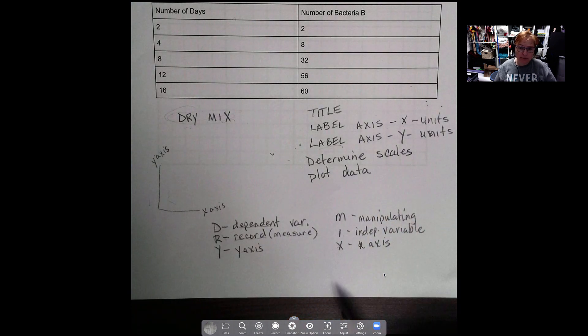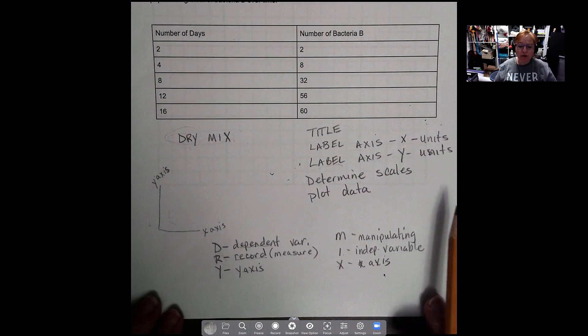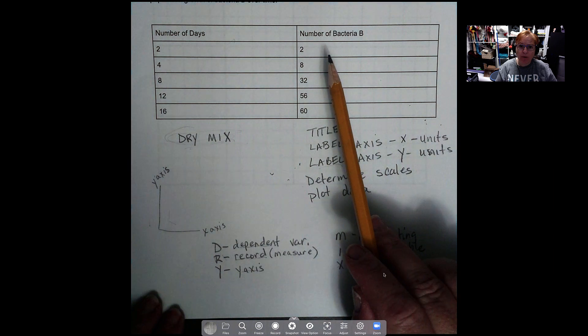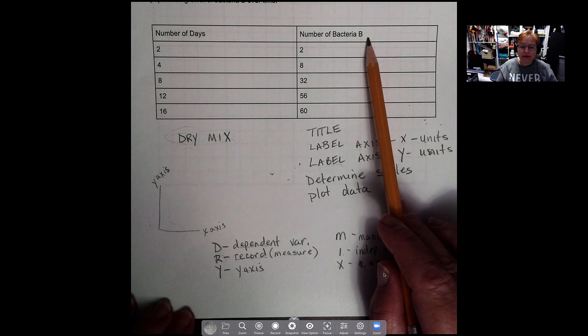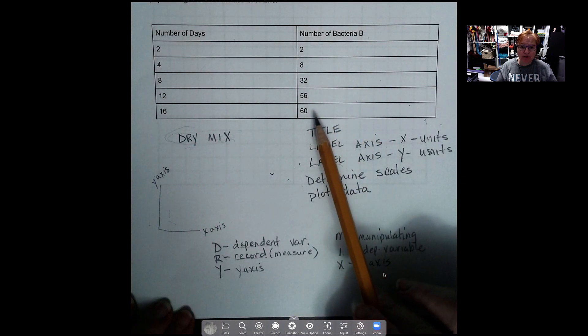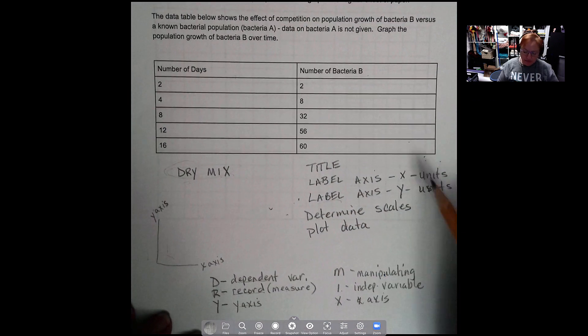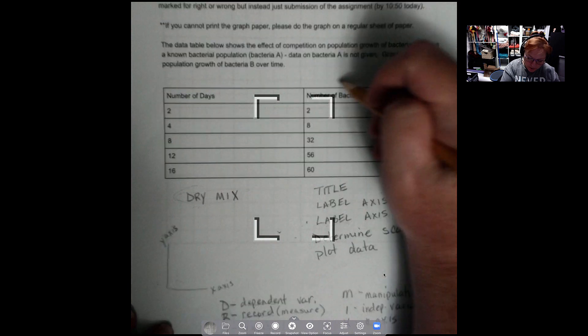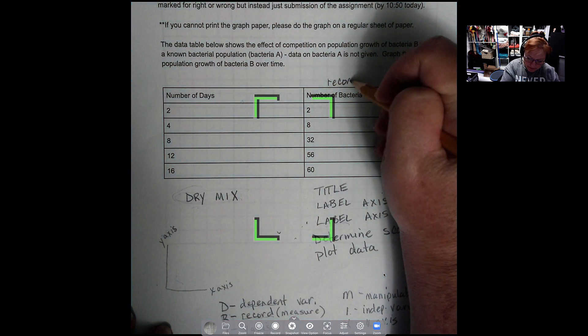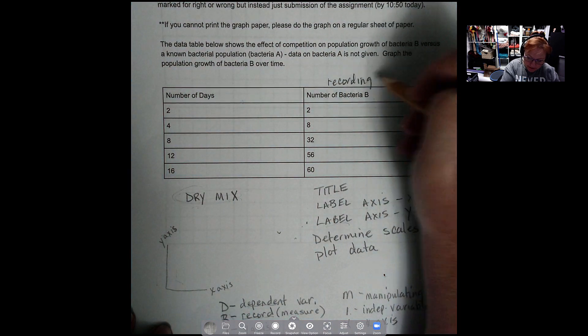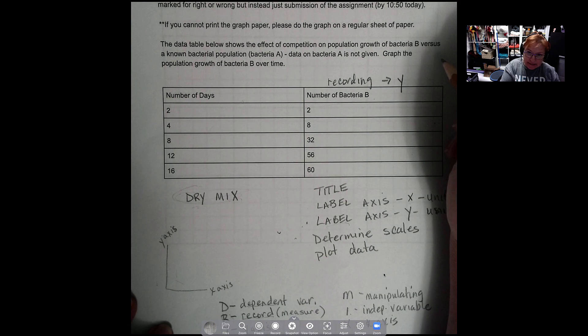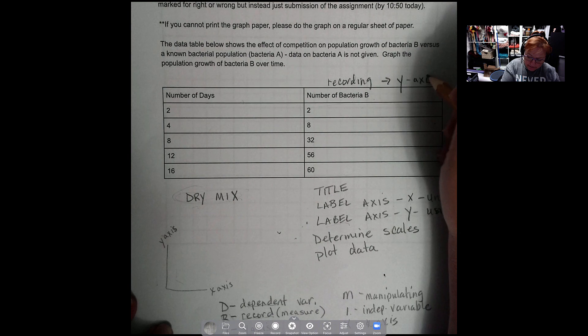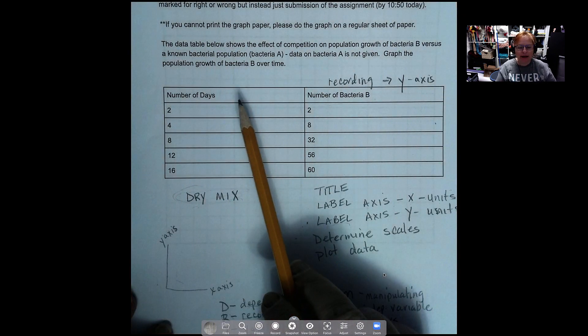Okay, so in order for us to be able to do our labeling, we have to know what is our dependent and our independent variable. So here what we are recording, what we are counting, what we are measuring is the number of bacteria. So we've got the 2, 8, the 32, the 56, 60, right? This is what we are recording. That makes this our dependent variable, and it goes on the y-axis.